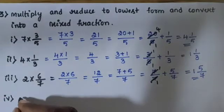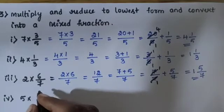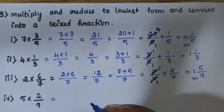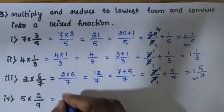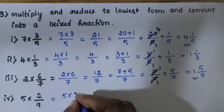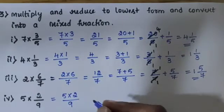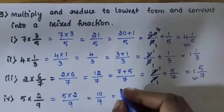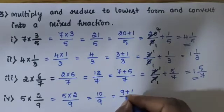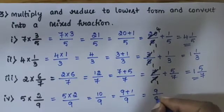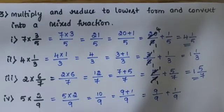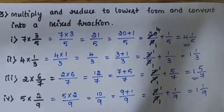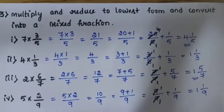Sub-question 4: 5 into 2 by 9. 5 is the whole number, multiplied by numerator 2, divided by denominator 9. 5 into 2 is 10, divided by 9. Split: 9 plus 1 divided by 9 gives 9 by 9 plus 1 by 9. Answer is 1 and 1 by 9.